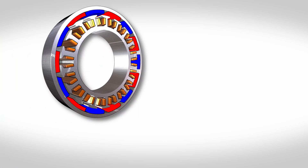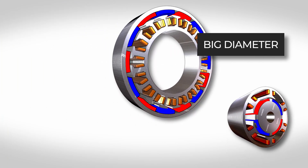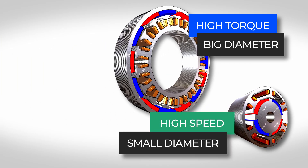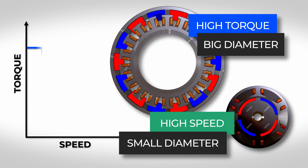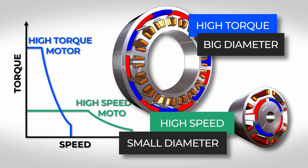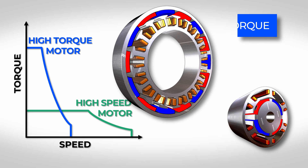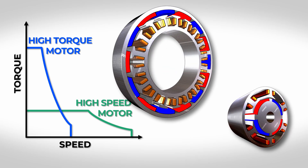High torque motors are relatively short and mostly have a large diameter. The large diameter produces a high torque in the lower speed range. On the other hand, high speed motors usually have a small diameter and are mostly relatively long, with much lower torque.